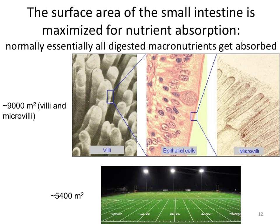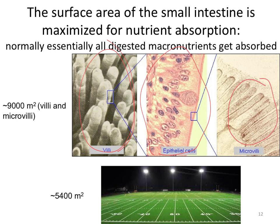A healthy small intestine has an enormous surface area that is maximized for nutrient absorption. There are macrovilli composed of many epithelial enterocytes, and on the surface of each of those epithelial cells there are numerous microvilli. Together this creates an enormous surface area — comparable to, and actually larger than, a football field if the small intestine is healthy.